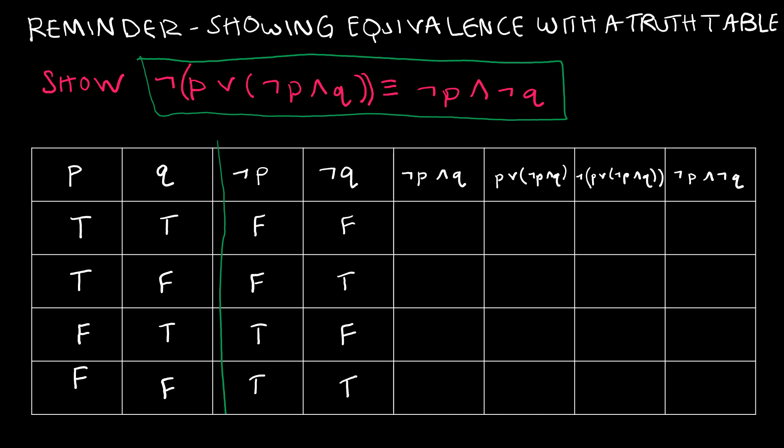And then I made a column for not P and Q, for P or not P and Q, and then the negation. So I had three columns for that left-hand side but this is the one I'm going to be looking at when I get to the end. And then for the right-hand side let's use a different color, we've just got not P and not Q. So let's go ahead and do some of the work.